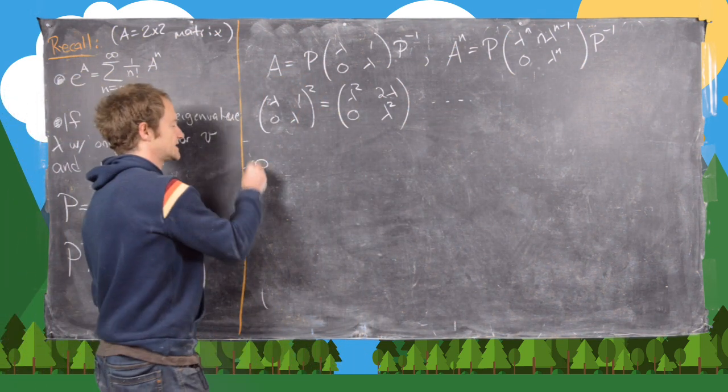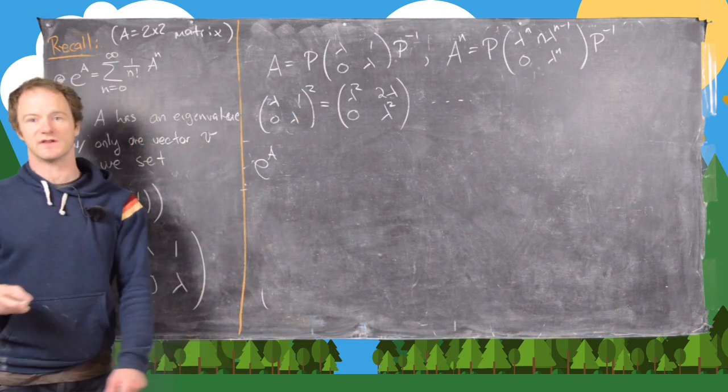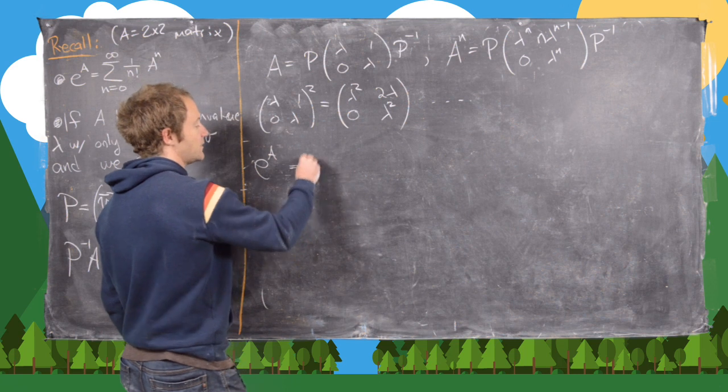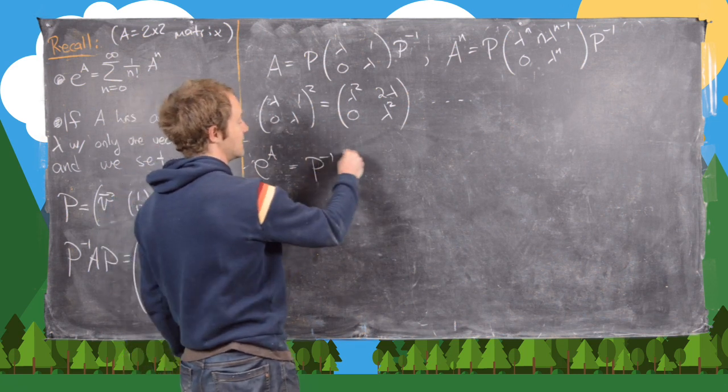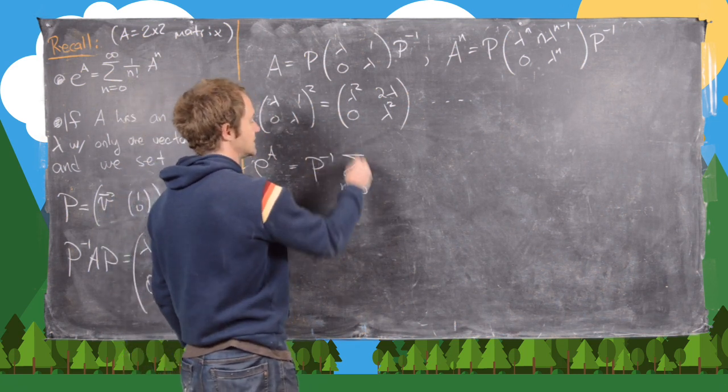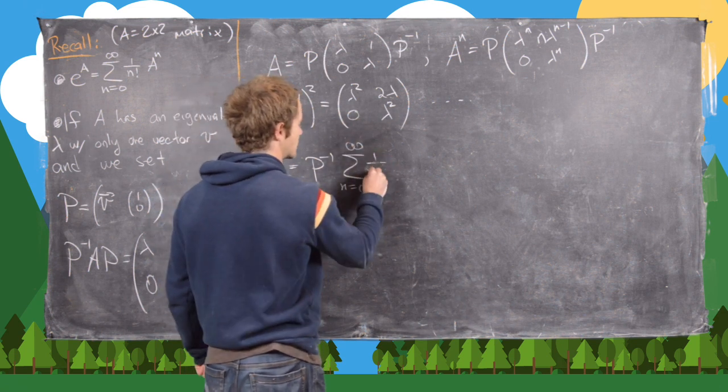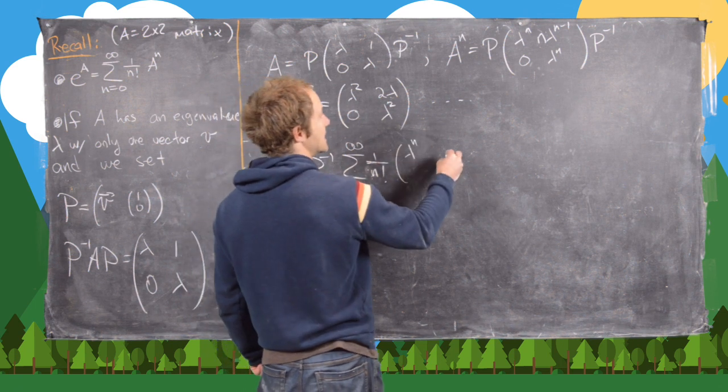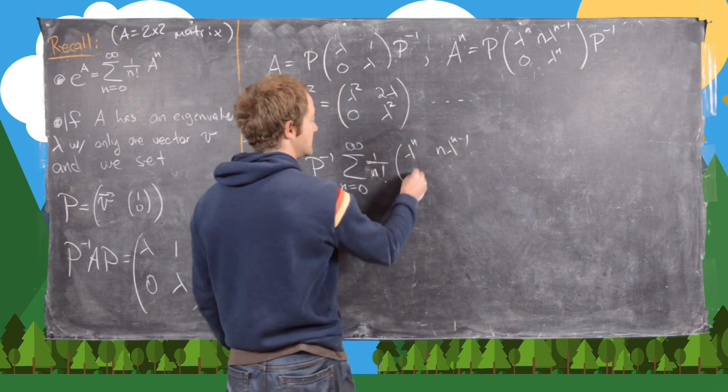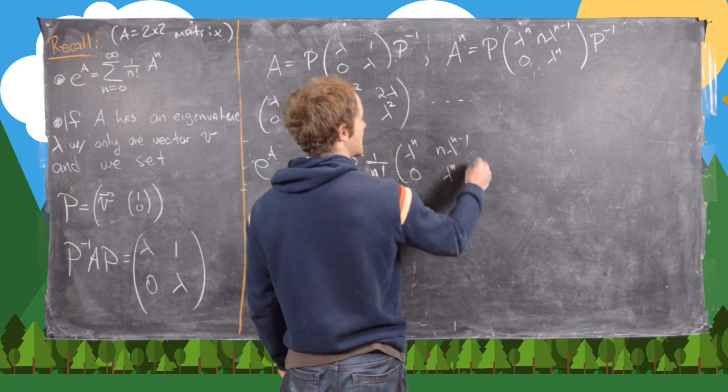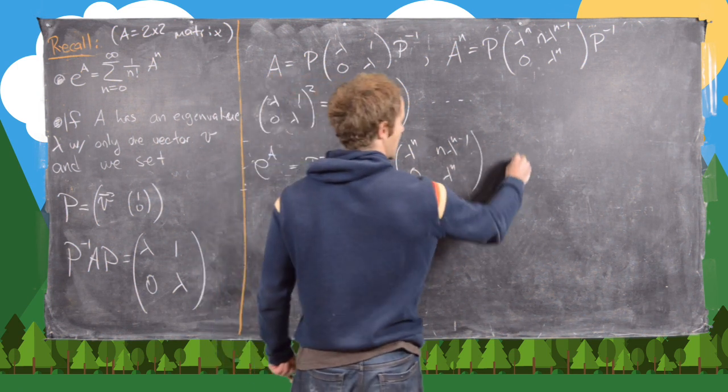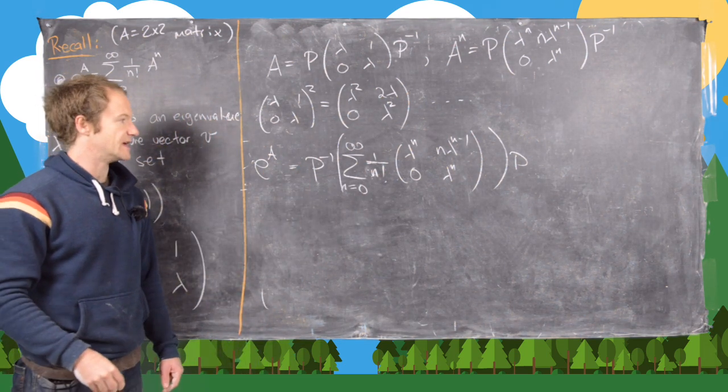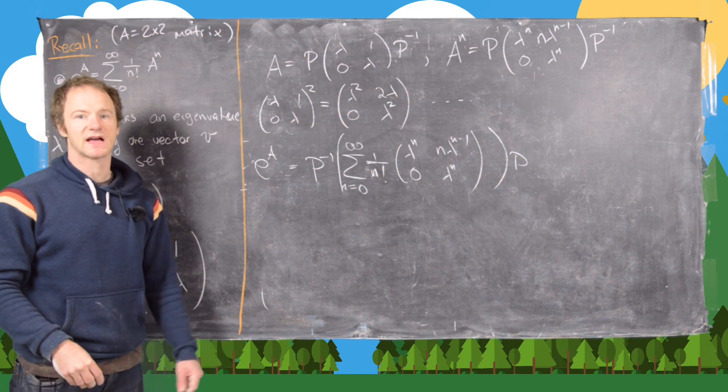So now the next thing we want to do is calculate the matrix exponential of this. So notice that's going to be equal to P inverse, and then the sum n equals 0 to infinity of 1 over n factorial, and now we have [λⁿ, nλⁿ⁻¹; 0, λⁿ], and then a P on the other side. Okay, the next thing I'm going to do is bring the sum inside of the matrix.